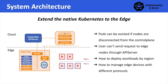First, how can we prevent pods from being evicted if edge nodes are temporarily disconnected from the API server? Second, how can API servers send requests to an edge node if they are located in two isolated networks? Third, how can we deploy workloads by region as system settings or device models in different regions may vary? Fourth, how can we manage edge devices with different protocols in a Kubernetes native way?